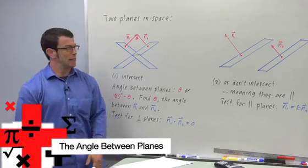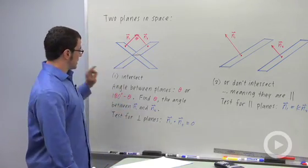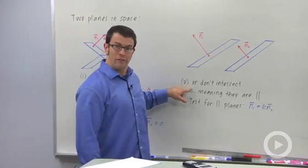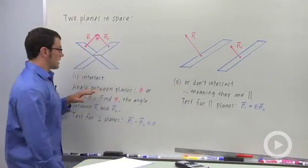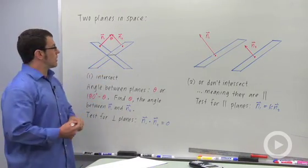Let's talk about the angle between planes. If you have two planes in space, there are two possibilities. Either they intersect or they don't ever intersect. If they do intersect, they intersect in a line and they'll make an angle with each other.